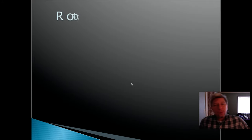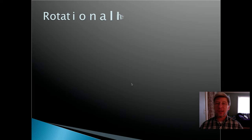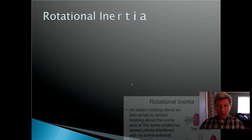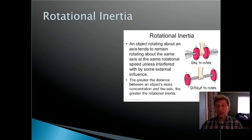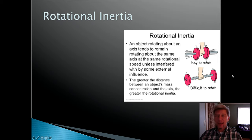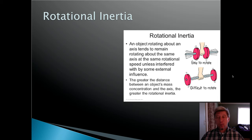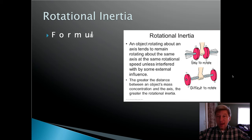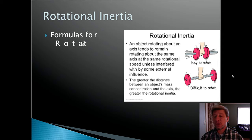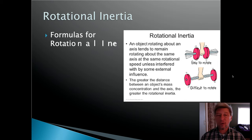When you deal with rotational inertia, there are a couple of things to keep in mind. An object that's rotating about an axis tends to remain rotating about the same axis at the same rotational speed, unless it's interfered with by some external influence — in other words, a force or a torque. In the example with the dumbbells, if the weights are close to the axis of rotation, it's easy to rotate. But if you move those masses away from that axis of rotation, increasing that distance, you give the object greater rotational inertia.